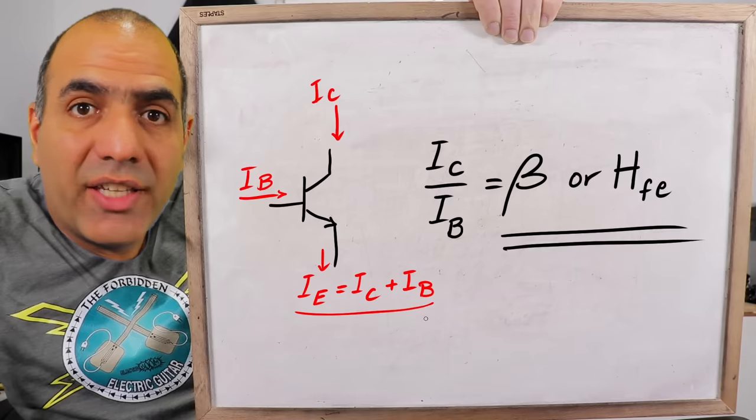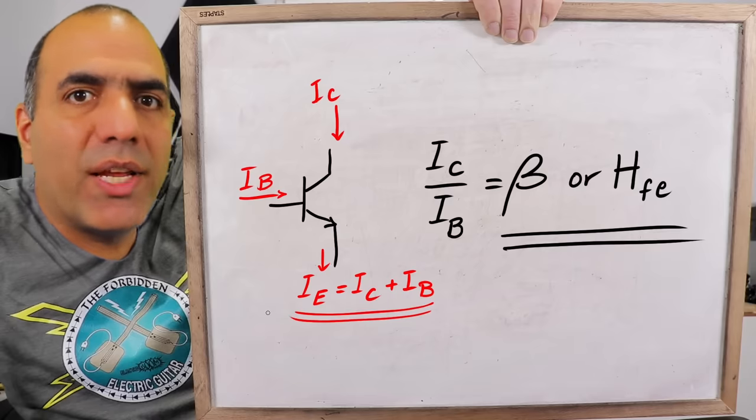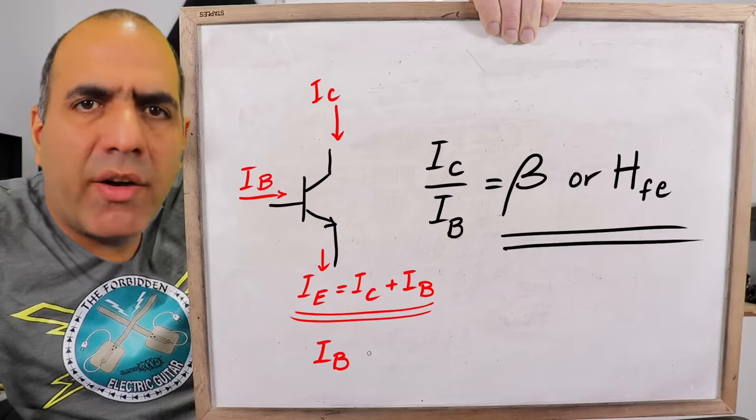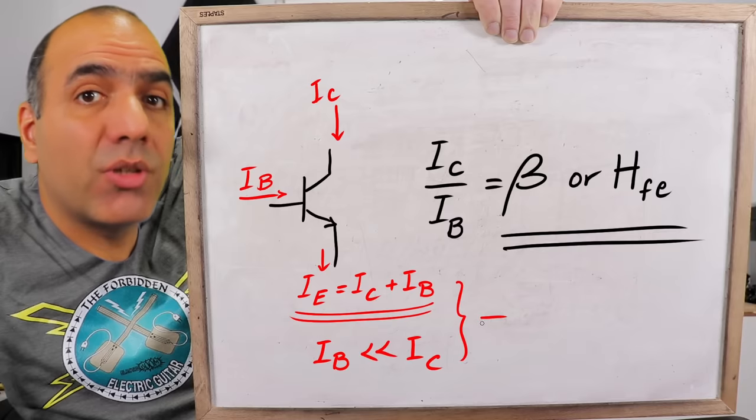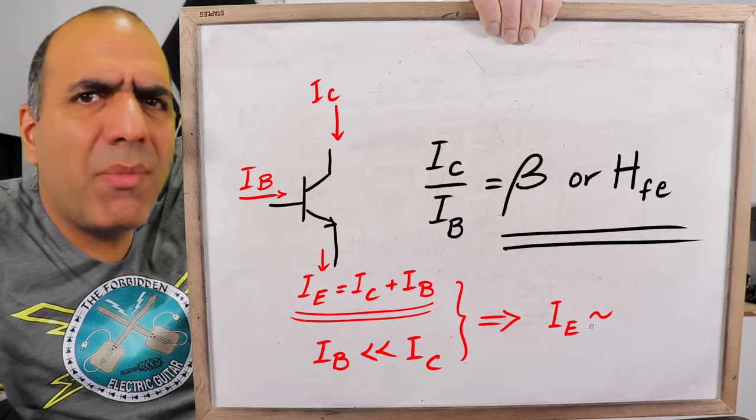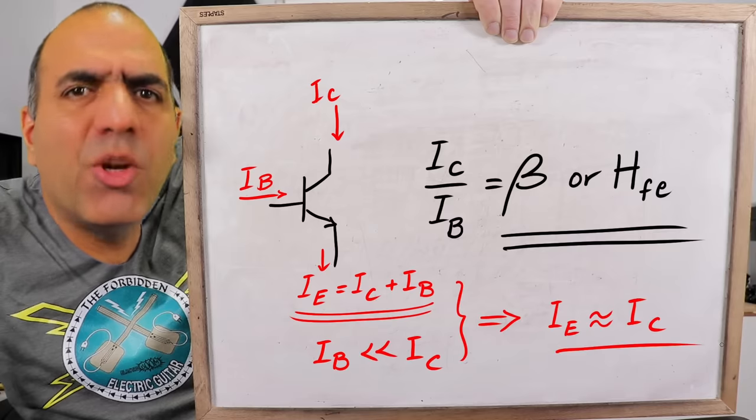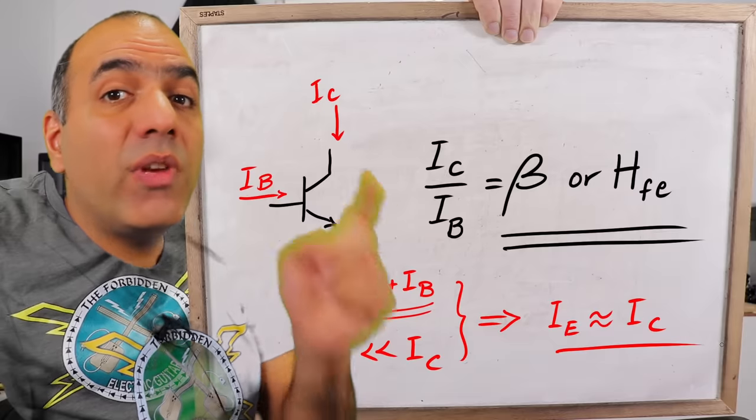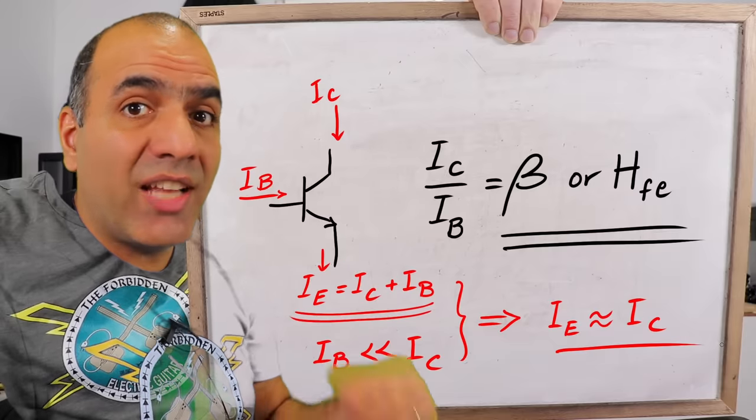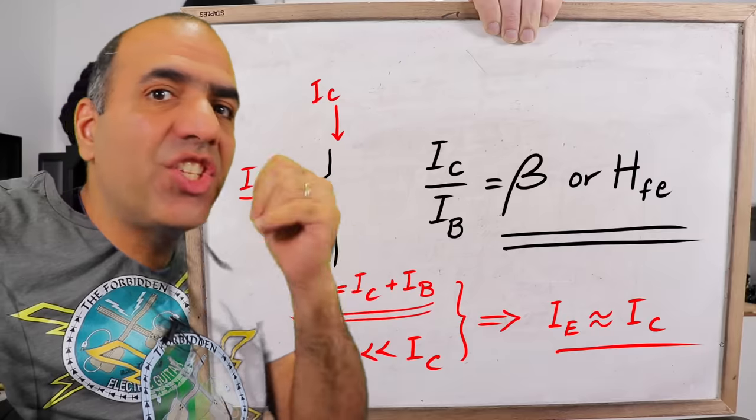So, like I said, we typically have a large collector to base current ratio, which is a factor we called beta or, as more commonly used in data sheets, HFE for some reason. Just remember the names. And, of course, the emitter current is the sum of base and collector currents. But with the base current being much smaller than the collector current, we often assume emitter and collector currents are equal.